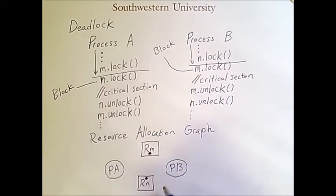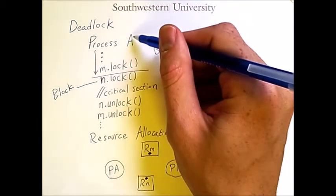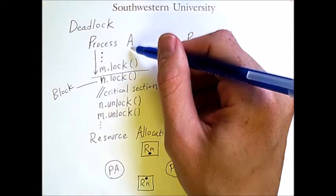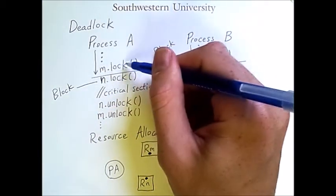So the circles and squares are actually vertices in a graph and we'll be drawing directed edges. So at the point when process A locks M,